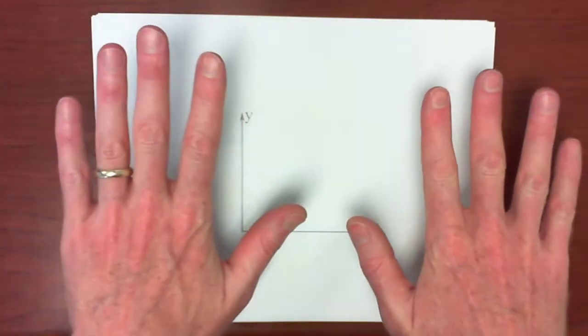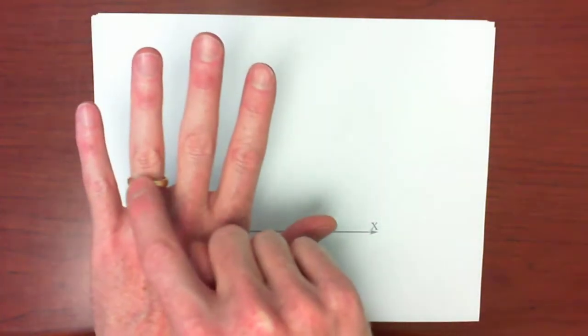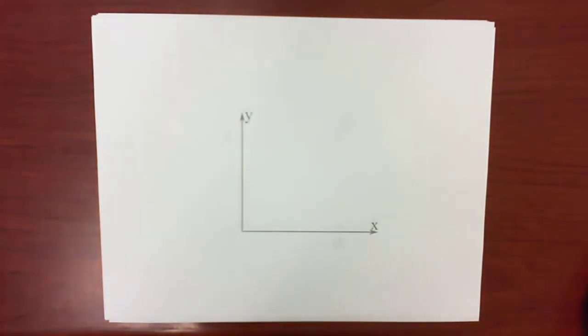First of all, these are my hands. I wear my wedding ring on my left hand and so I'm always going to be using my right hand for the right-hand rule. Make sure that you're doing the same.